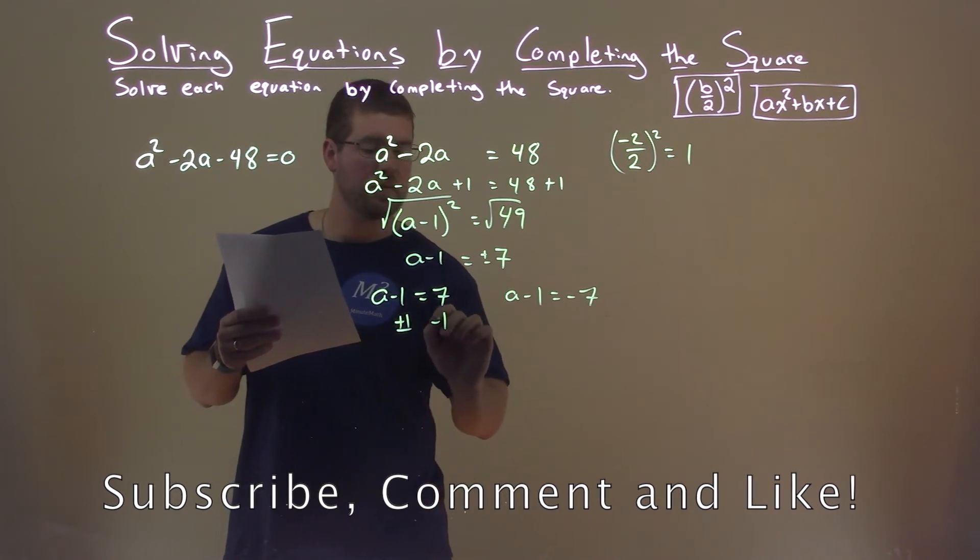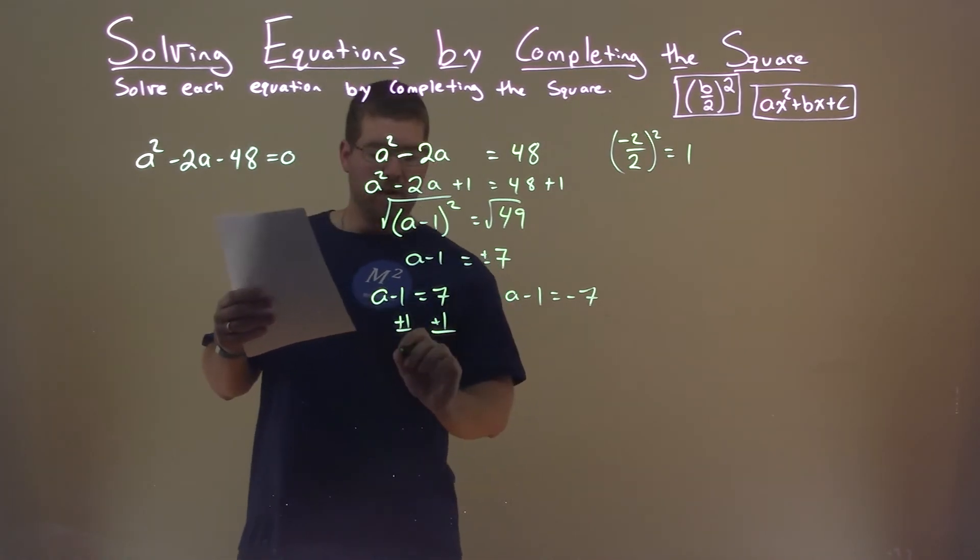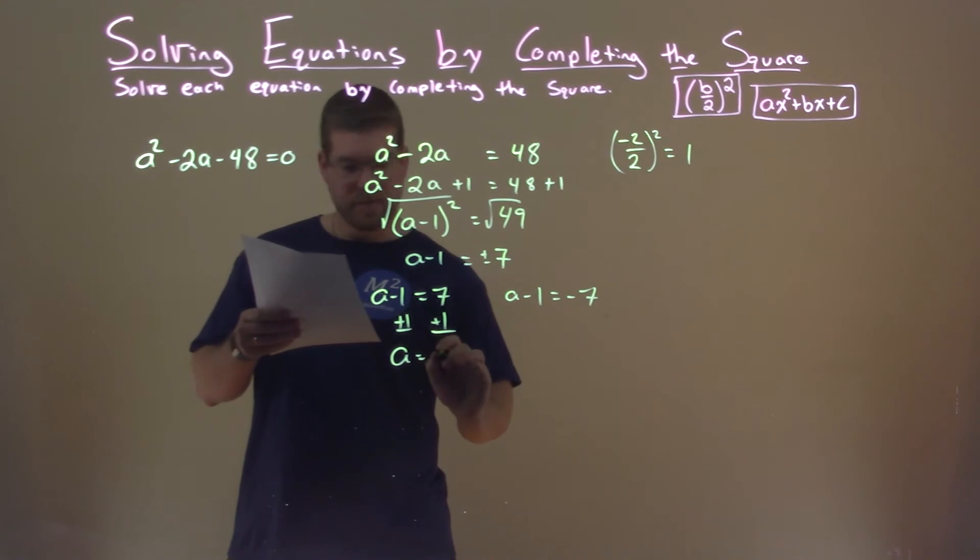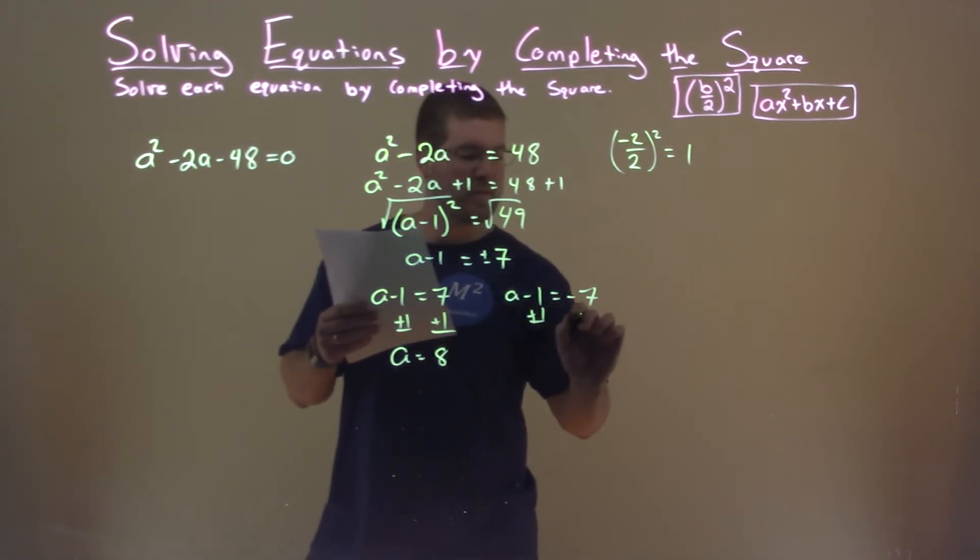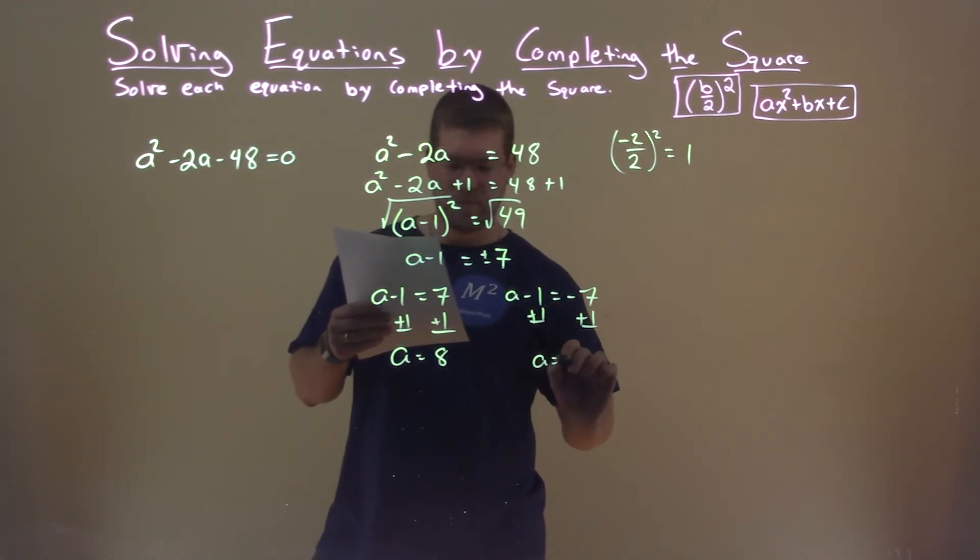Add 1 to both sides, and we have a equals a positive 8, and add 1 to both sides here, and a equals a negative 6.